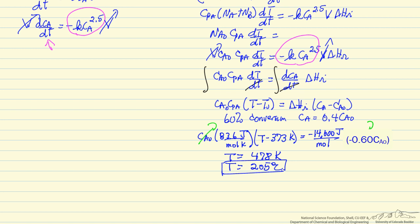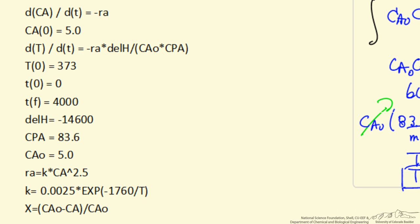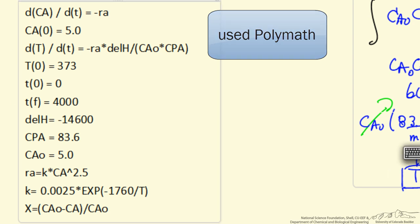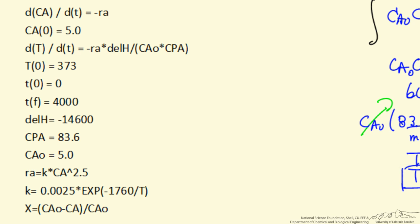The program will then calculate the temperature, the concentration, conversion at any later time. Here are the equations that we will substitute into a program that solves ordinary differential equations. These are in the format for POLYMATH. We have the mass balance, energy balance, our initial time, and we just guessed the final time, and then ran it a few times to get a value close to 60%, and that we could then read off the exact value.